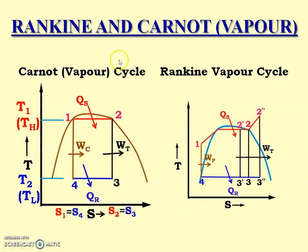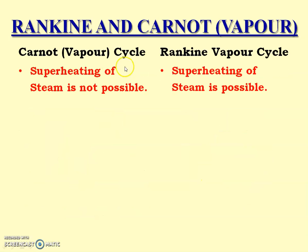Now, this is the TS diagram for the Carnot vapor cycle as well as the Rankine vapor cycle. In the Carnot vapor cycle, at point number two, the condition of steam is fixed — it is dry. But in Rankine vapor cycle, the steam at that point can be dry, wet, or superheated. At point four in Carnot vapor cycle, the condition is wet steam only, whereas at point four in Rankine vapor cycle, it is saturated liquid. Due to that, superheating of steam is not possible in Carnot vapor cycle, but superheating is possible in Rankine vapor cycle.